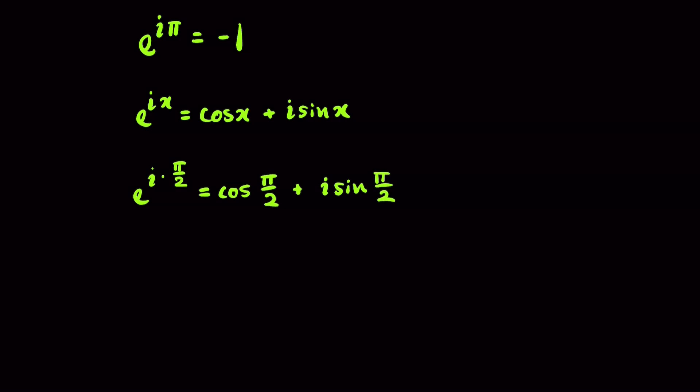Well, what is cosine of pi over 2? That is just 0, so this is equal to 0 plus i times sine of pi over 2. Well, sine of pi over 2 is 1. So this whole result here is just equal to i.